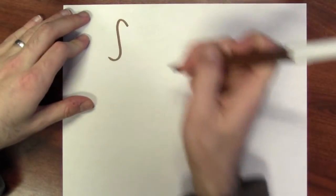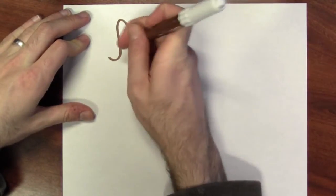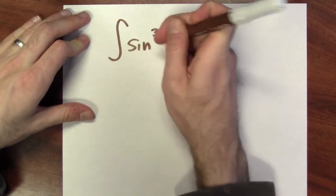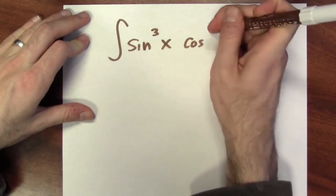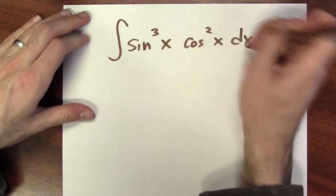Let's try making some trades. For example, let's try to anti-differentiate sine cubed of x times cosine squared of x dx.